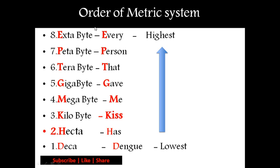This trick is based on the order of the metric system. Many people feel confused trying to remember this order, but don't worry — follow my trick and you can easily remember it. Read from bottom to top, because deca is the lowest and extra is the highest. The order is: deca, hecto, kilo, mega, giga, tera, peta, extra. Deca has the lowest memory size and extra has the highest.